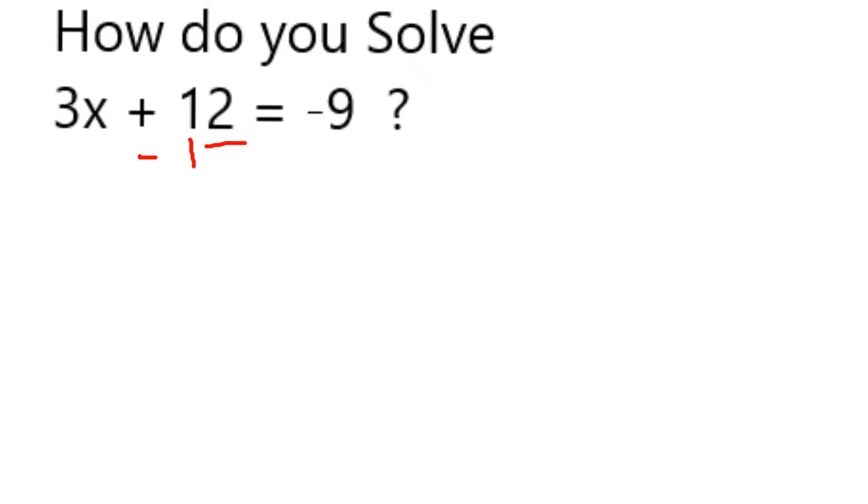First, I can take away 12 from both sides. If I subtract 12 on the right-hand side, that's going to cancel and leave me with 3x.